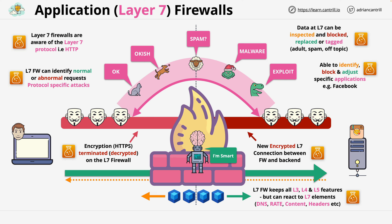Some layer 7 firewalls only understand HTTP, some understand SMTP — the protocol used for email delivery. The limit is only based on what the firewall software supports. That's everything I wanted to cover at a high level. Coming up in future videos, I'll be covering how AWS implements layer 7 firewall capability into its product set. For now, this high-level understanding is what I wanted to help with in this video.